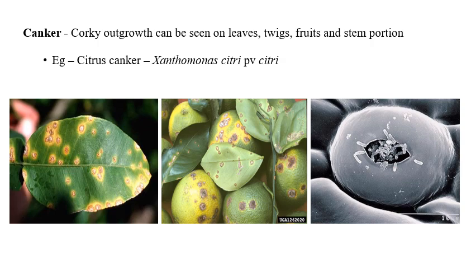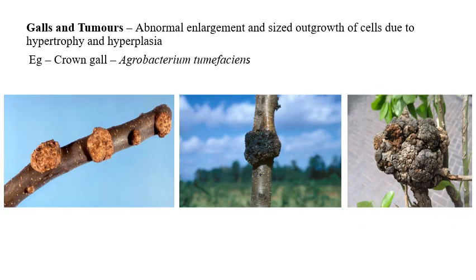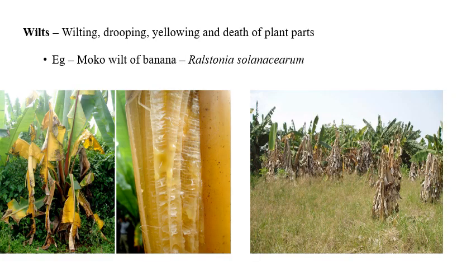The next symptoms are galls and tumors, which involve abnormal enlargement or increase in cell size due to abnormal hypertrophy and hyperplasia — similar to what is seen in club root of cabbage. The example is crown gall, caused by Agrobacterium tumefaciens, where abnormal outgrowth of tissues due to abnormal cell divisions and enlargements can be observed.